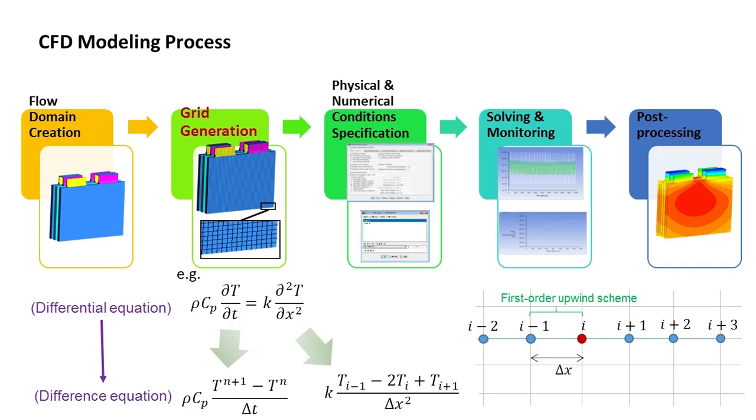The reason for dividing the domain into smaller elements is such that each of these elements will be treated as a control volume with simpler shapes and boundary conditions. We apply the discretized equations to each of these elements and obtain the local solutions.